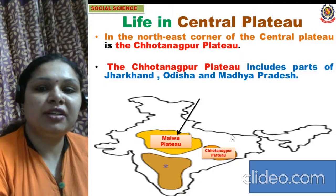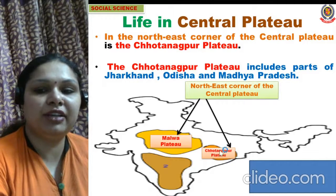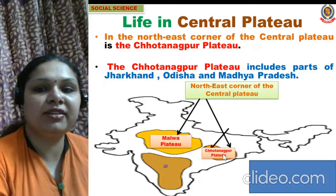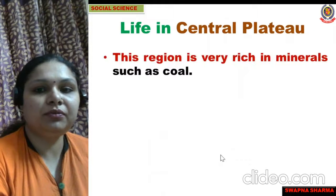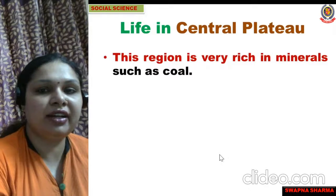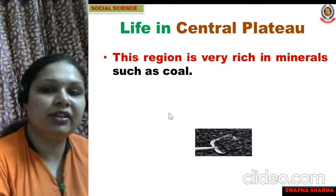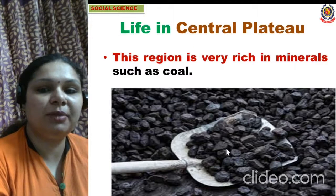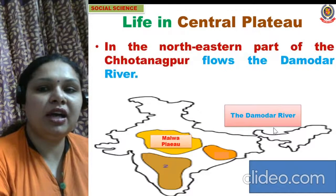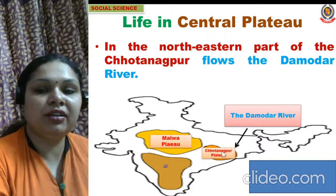The Chhota Nagpur plateau includes the states of Jharkhand, Odisha, and Madhya Pradesh. This region is very rich in minerals, particularly coal. Coal is extracted from mines under the earth. In the northeastern part of Chhota Nagpur, the Damodar river flows.